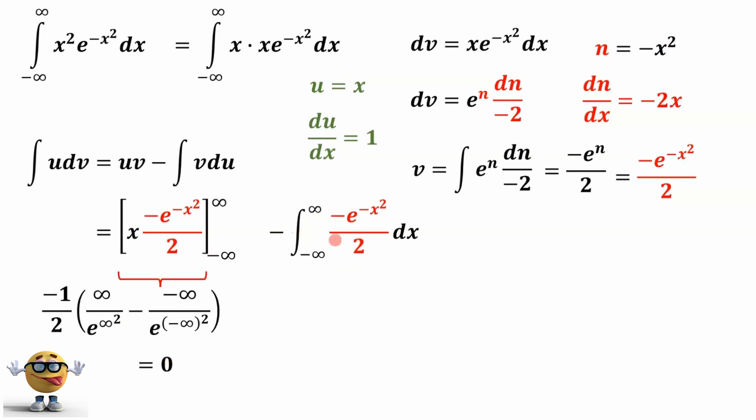Now for this one right here, we can clean it up a little bit. We have a negative and a negative, so if we pull that out, that just becomes positive. And we pull out the one half out of the integral right here. We literally have the integral of e to the negative x squared. This integral does take a little bit of time to evaluate, and I did it in another video. So you can check out that video.